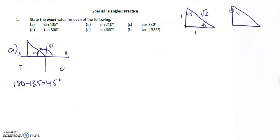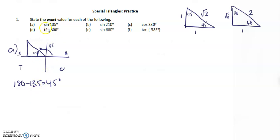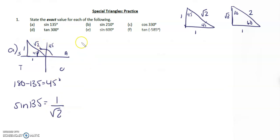So we have a 45-45 and a 30-60. Opposite 60 is root 3, opposite 30 is 1, and the hypotenuse is 2. So what is the ratio for sine 135? Sine 135 is 1 over root 2, and this is positive because we're in the S quadrant.